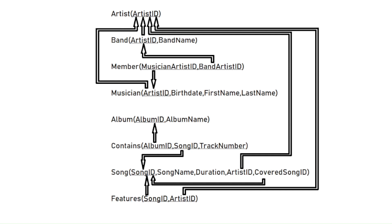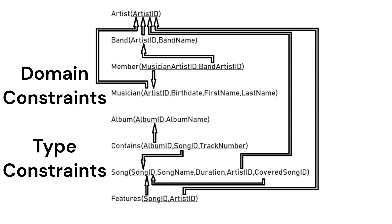Another common constraint that is not visualized here is the domain constraint. These assure that each attribute comes from the proper domain. However, the actual domain may be hard to programmatically specify, so an actual database system will often settle for type constraints. Based on the data that we saw in these tables in the previous video, all ID fields for primary and foreign keys are constrained to be positive integers. The track numbers must also be positive integers. All names are constrained to be strings, and although none was evident, there would typically be a maximum allowable length on such strings. Birthdate is a date, and duration is a measurement of time. Additional logical constraints could be defined on top of these basic categories.